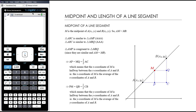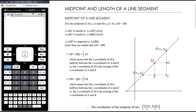Let's start with the midpoint of a line segment. I've got a generalised diagram here — just a random straight line. It looks like it has a gradient of positive 1, but this would work for any kind of gradient. M, the red point, is the midpoint of A and B. A has coordinates x1, y1 and B has coordinates x2, y2.